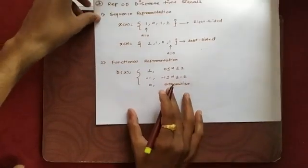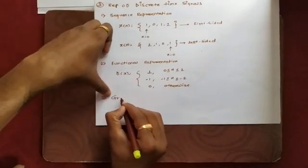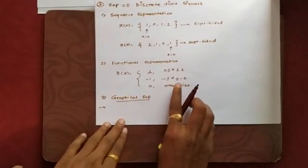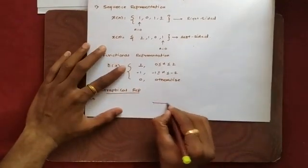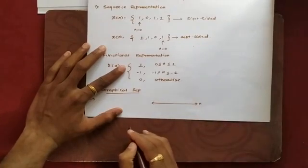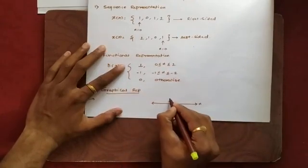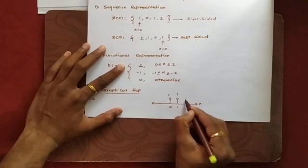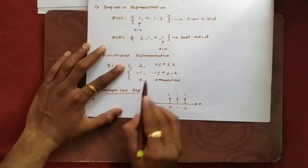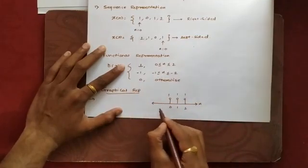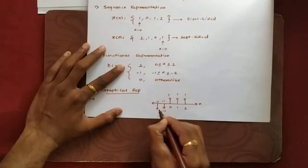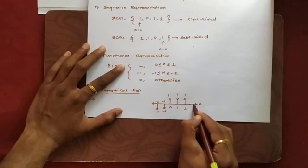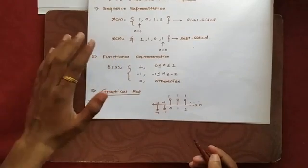Based on the functional representation we go to the third step — graphical representation. We take the same example. We plot n on the x-axis. The amplitude is 1 for samples at n=0, 1, and 2 on the right side. The amplitude is −1 for n=−1 and n=−2 on the left side. For all other positive and negative values the amplitude is 0, shown with dashes. This is our graphical representation.